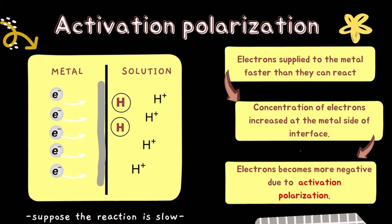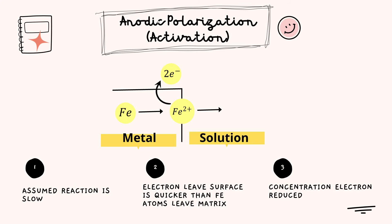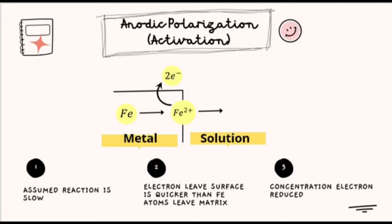For anodic polarization, it is believed that the reaction will be sluggish. The electrons leaving the surface are thus quicker than the Fe atoms leaving the matrix. The concentration of electrons will be reduced on the metal side of the interface.